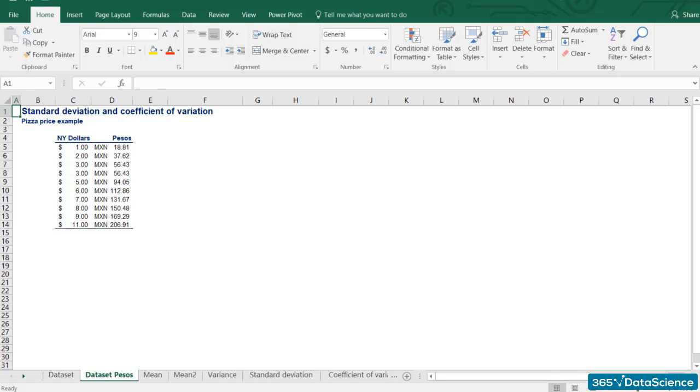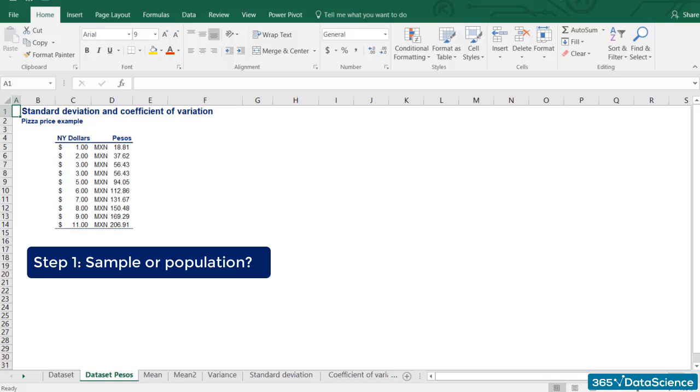Let's combine our knowledge so far and find the standard deviations and coefficients of variation of these two datasets. First, we have to see if this is a sample or a population. Are there only 11 restaurants in New York? Of course not. This is obviously a sample drawn from all the restaurants in the city. Then we have to use the formulas for sample measures of variability.